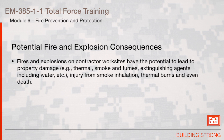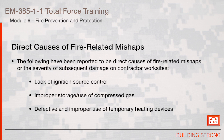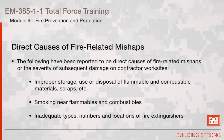Fires and explosions on contractor work sites have the potential to lead to property damage — for example, thermal, smoke, and fumes, extinguishing agent damage including water — injury from smoke inhalation or thermal burns, and even potentially death. The following have been reported to be direct causes of fire-related mishaps or the severity of subsequent damage on contractor work sites: lack of ignition source control, improper storage and use of compressed gas, defective and improper use of temporary heating devices, improper storage, use, or disposal of flammable and combustible materials and scraps, smoking near flammables and combustibles, and inadequate types, numbers, and locations of fire extinguishers.